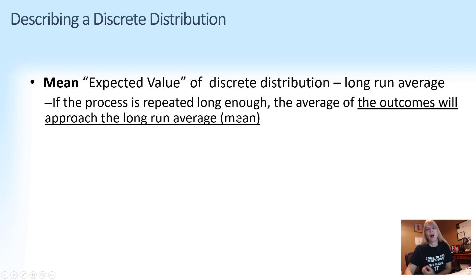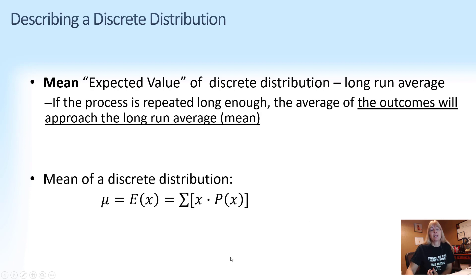So the mean a lot of times they call this expected value. What would you expect to get in the long run? Like flipping a coin, you would expect to get heads half the time. This isn't an average formula that you can just use. You have to take each value of your random variable, say like heads, and then times the probability.